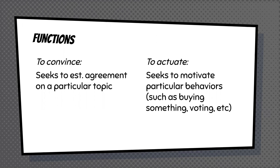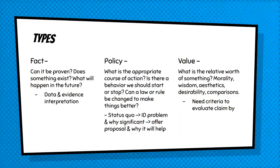Get a verbal agreement from them to actually do it, because people tend to want to do the things they say they're going to do. When we're specifically talking about persuasive speeches given to an audience, there are three main types: you have questions of fact, questions of policy, and questions of value.